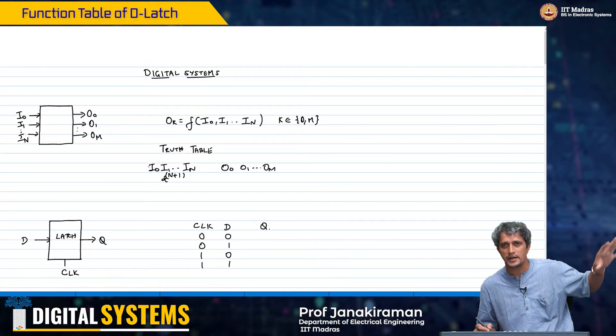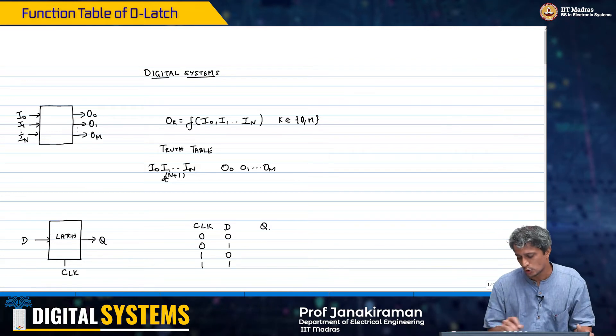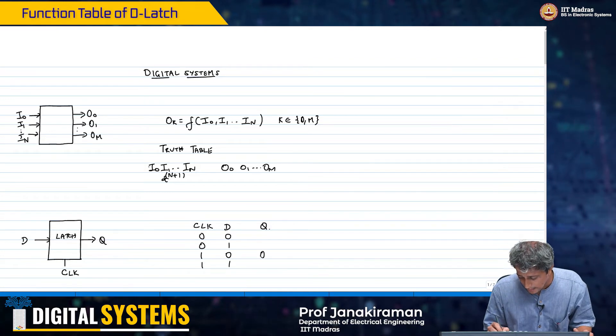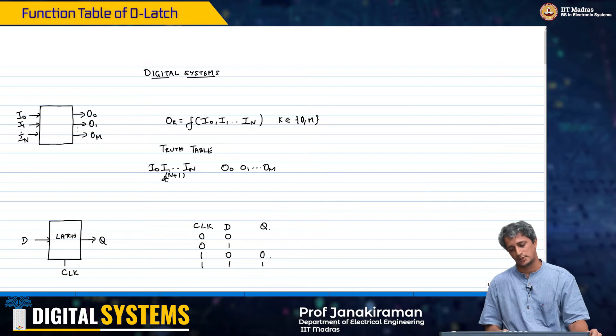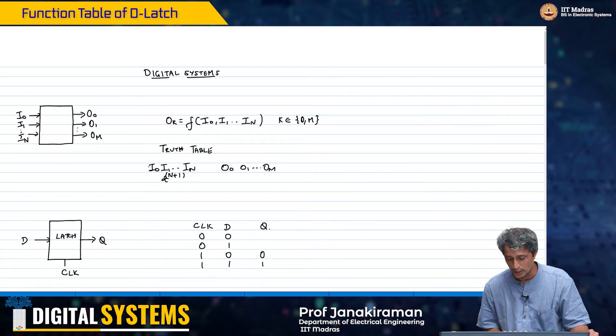When the clock is 1, D is just going to go out to Q. That means I can describe this state like this: 0 and 1.